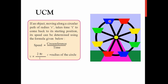For example, consider a giant wheel. At every point, the cabins are moving, and if the motion is uniform circular, you can find the time taken for a cabin to travel from one point to another. Once the time is calculated and the circumference is known, you can ultimately find the velocity of the body in UCM.